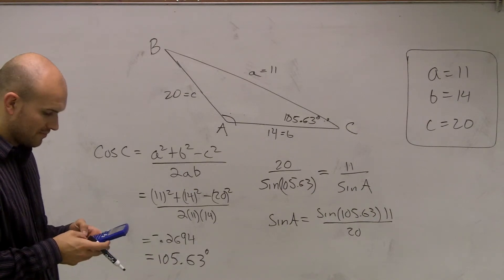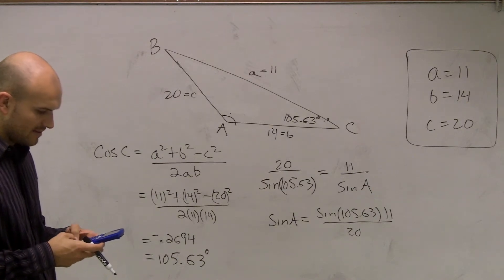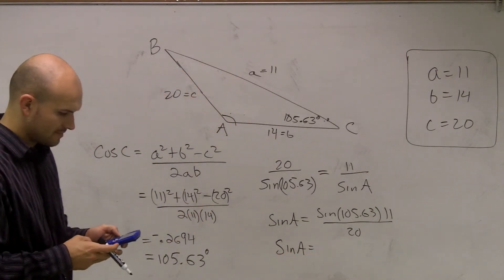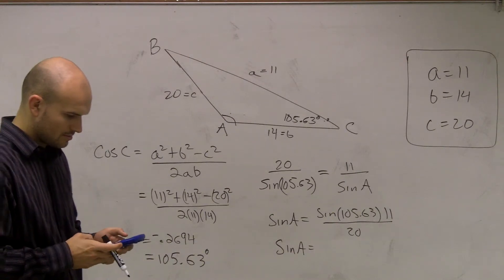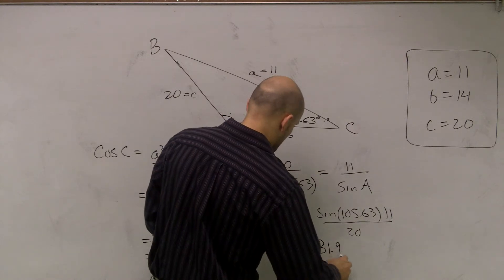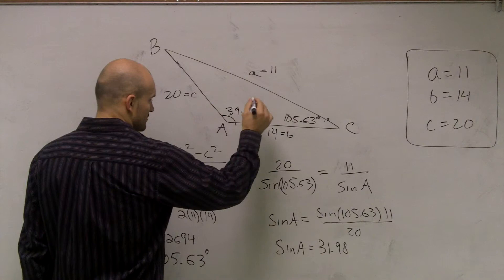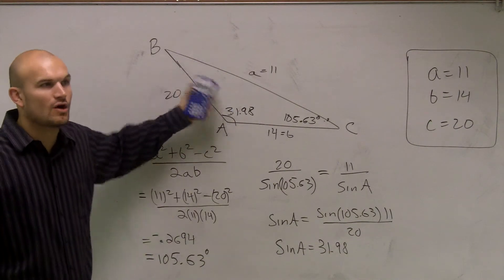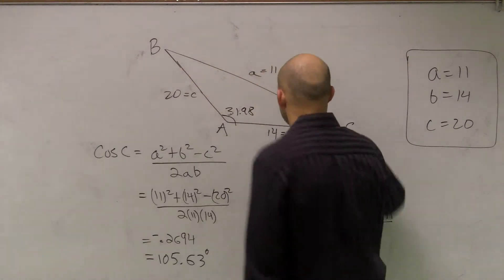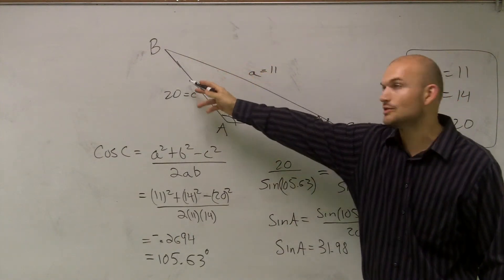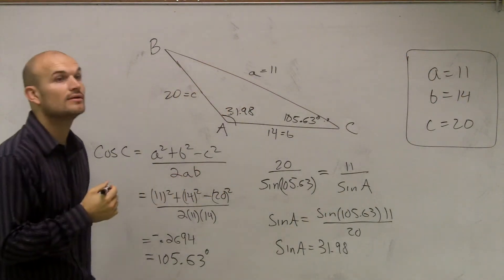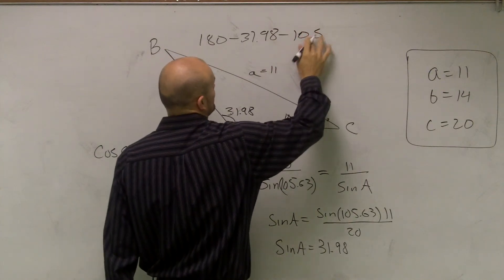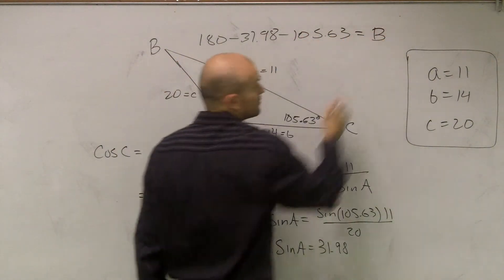Sine of 105.63 times 11 divided by 20 equals 0.52. Then taking the inverse sine of that gives us 31.98 degrees. So angle A is 31.98 degrees. Now we could use the law of sines or cosines again, but we understand that all angles add up to 180, giving us angle B.